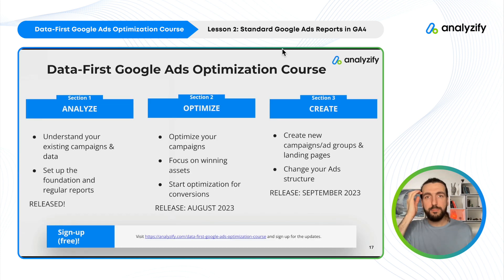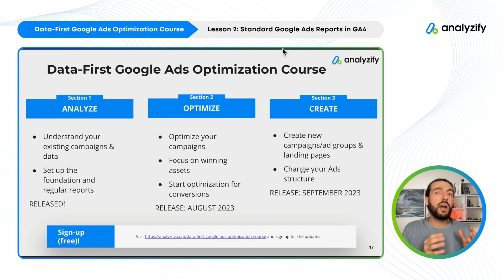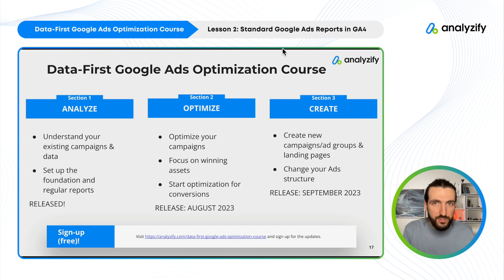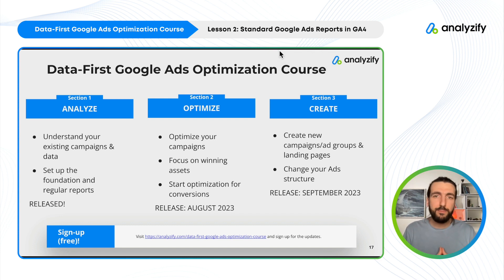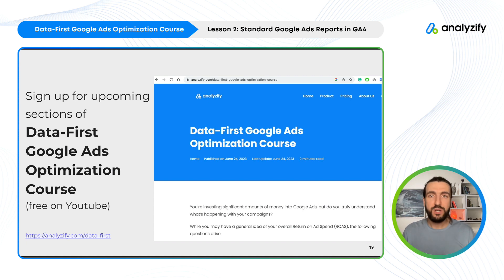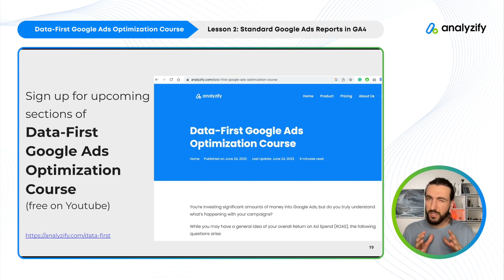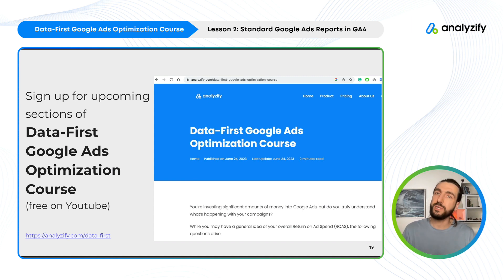I'd like to quickly mention our course in case you're seeing this video for the first time. This is the first analysis section of our DataForce Google Ads optimization course. The course has six videos and you're now in the second one — I strongly recommend you complete it. We will also soon release our Optimize and Create sections. To not miss updates, you can sign up on our website and we'll email you when we release more episodes or update the course. Thank you so much for watching — I hope it was helpful and see you in the next video.